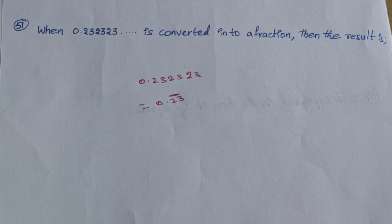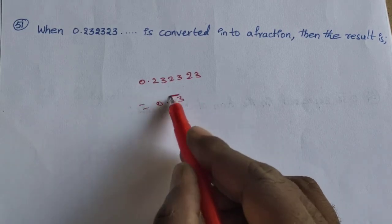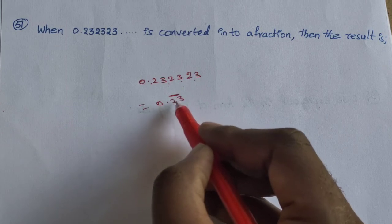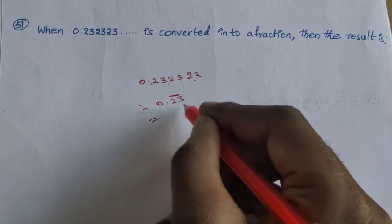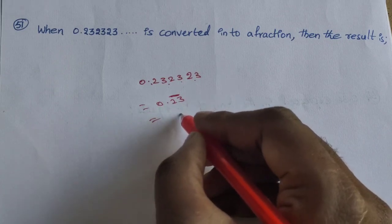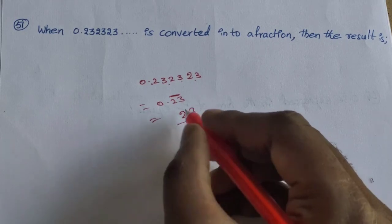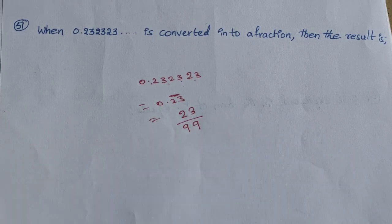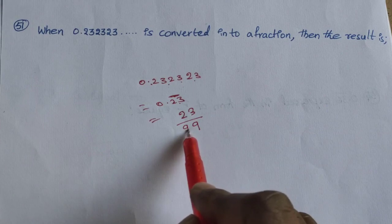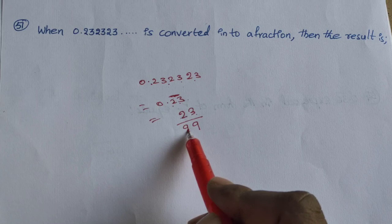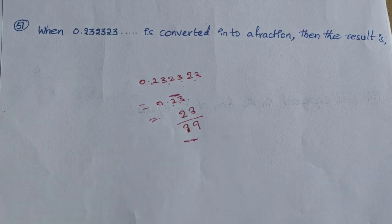0.23 bar repeats as 0.23 0.23... The fraction is obtained by placing 23 over 99. So 0.232323... equals 23 by 99.